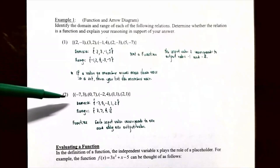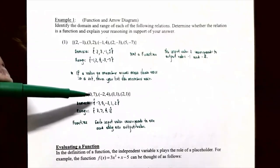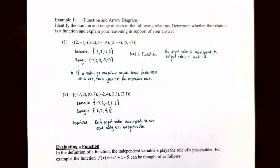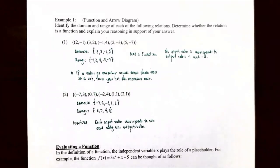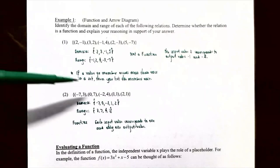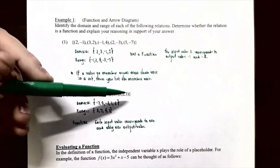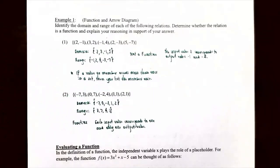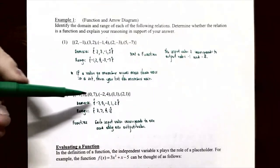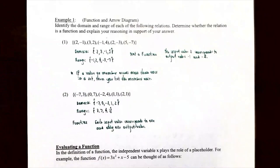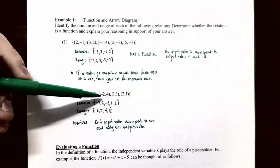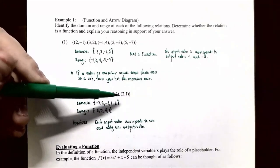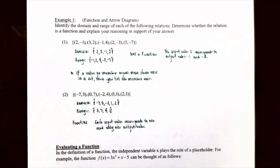For the second set {(-7, 3), (0, 7), (-2, 4), (1, 1), (2, 1)}: the domain is {-7, 0, -2, 1, 2} and the range is {3, 7, 4, 1} (listing 1 only once). This does represent a function because each input value corresponds to exactly one output: -7 → 3, 0 → 7, -2 → 4, 1 → 1, and 2 → 1. Every input maps to exactly one output.